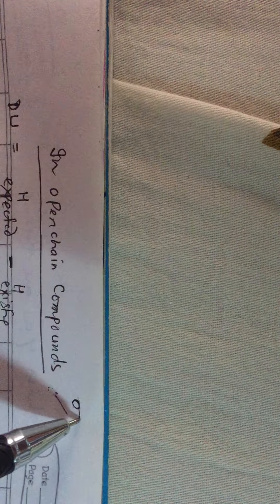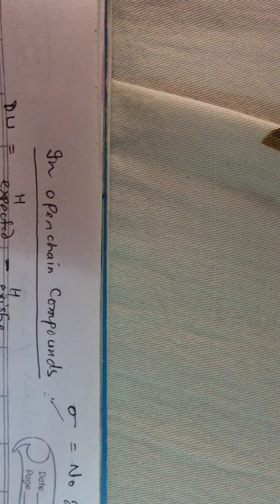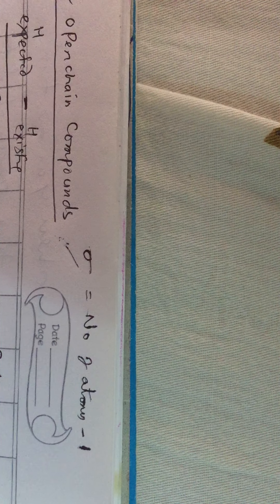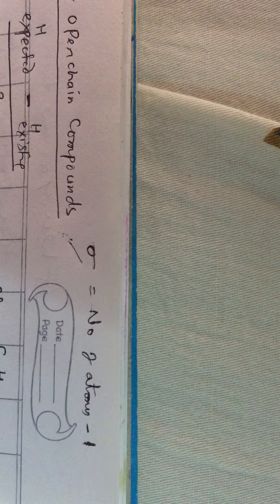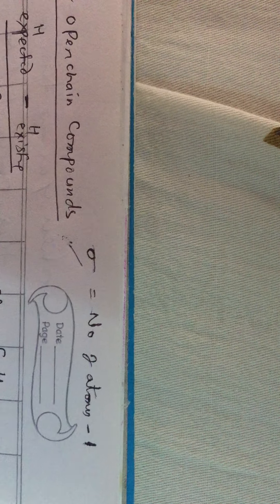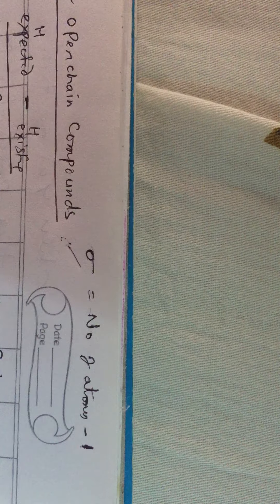In any open chain compound, the number of sigma bonds is essentially equal to the total number of atoms minus 1, provided it is a covalent molecule.